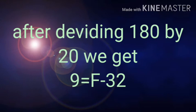If we multiply 20 into 9 times we get 180, so the answer will be 9. So now the equation will be 9 equal to F minus 32.